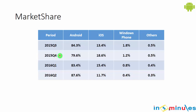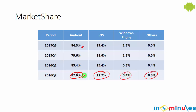Even if we hear a lot about iPhone, the global figures tell a different story. From 2015 to 2016, Android holds 87.6 percent of the market, while iOS holds only 11.7 percent. Setting aside Windows and other operating systems, Android is clearly the dominant platform.